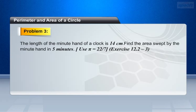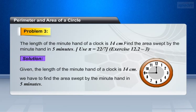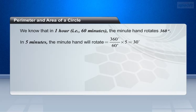Problem 3: The length of the minute hand of a clock is 14 cm. Find the area swept by the minute hand in 5 minutes. Use pi equals 22 by 7. Solution. Given the length of the minute hand of a clock is 14 cm. We know that in 1 hour, that is 60 minutes, the minute hand rotates 360 degrees. In 5 minutes, the minute hand will rotate 360 degrees by 60 into 5, which equals 30 degrees.